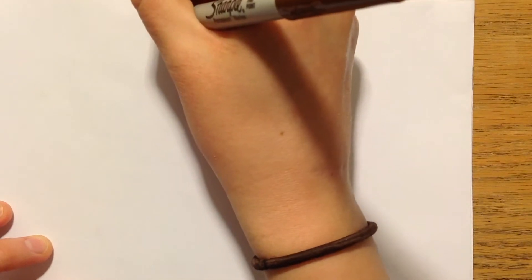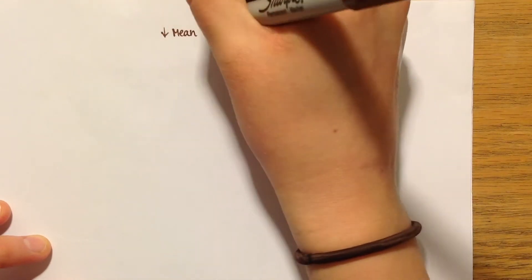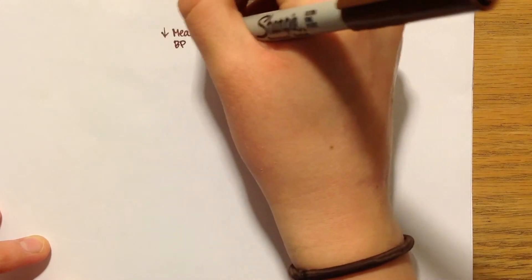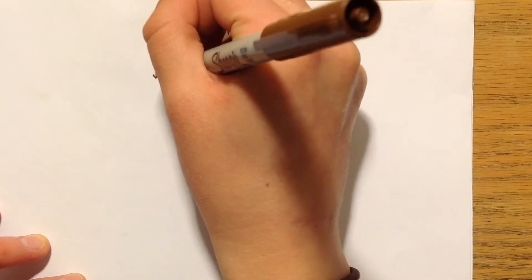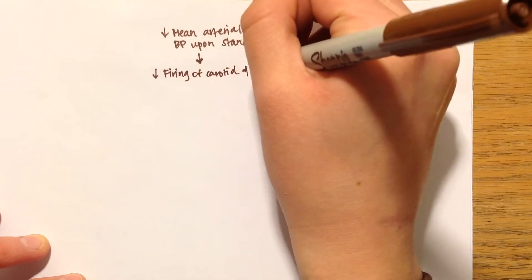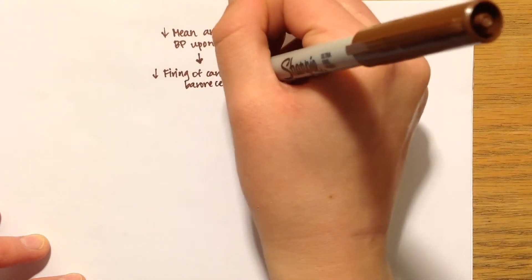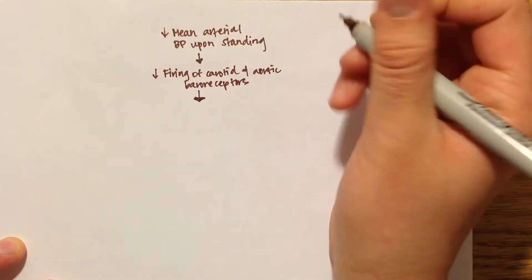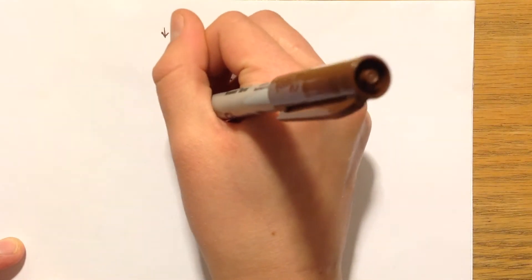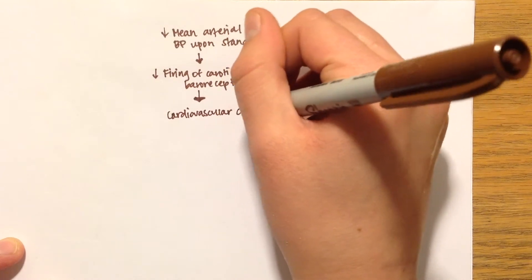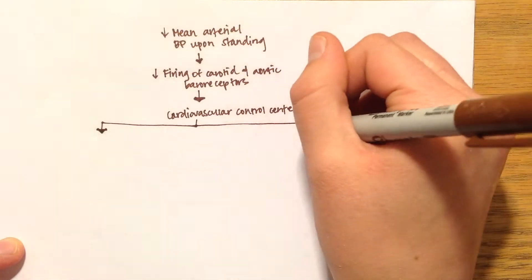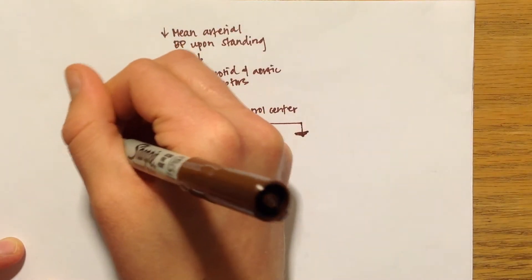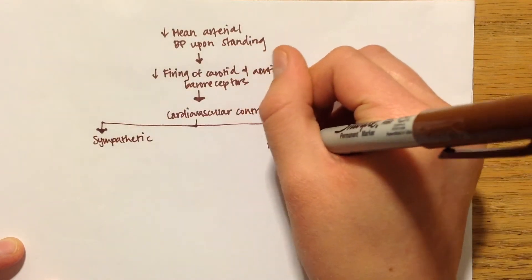Here I will use an example so we can look at some specifics of the baroreflex. Let's say that you just stand up from watching this video so your body has a lower than normal blood pressure. That means that the carotid and aortic baroreceptors will fire less. The cardiovascular control center would increase the sympathetic response. Remember that the cardiovascular control center does both parasympathetic and sympathetic. In this case, it would be increasing the sympathetic and then having a decreased parasympathetic response.